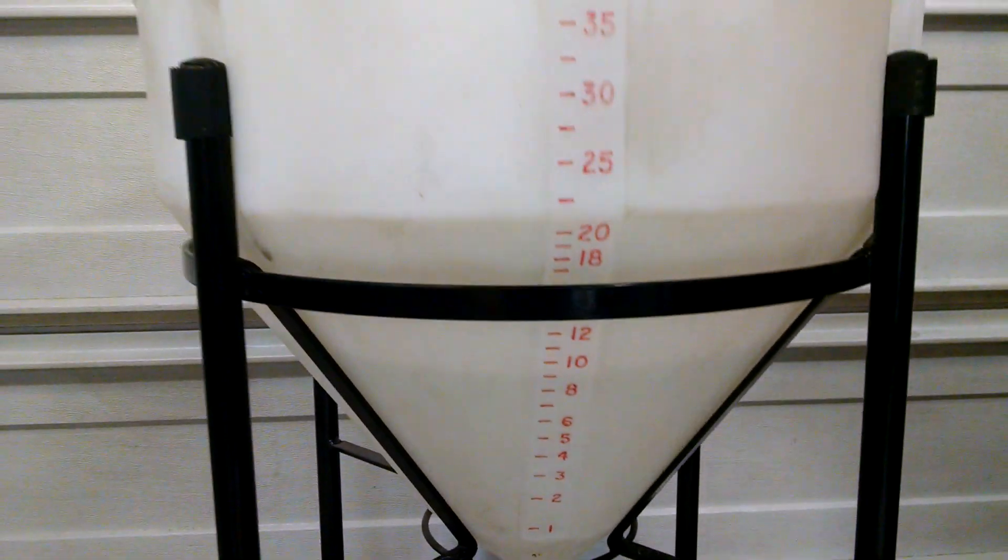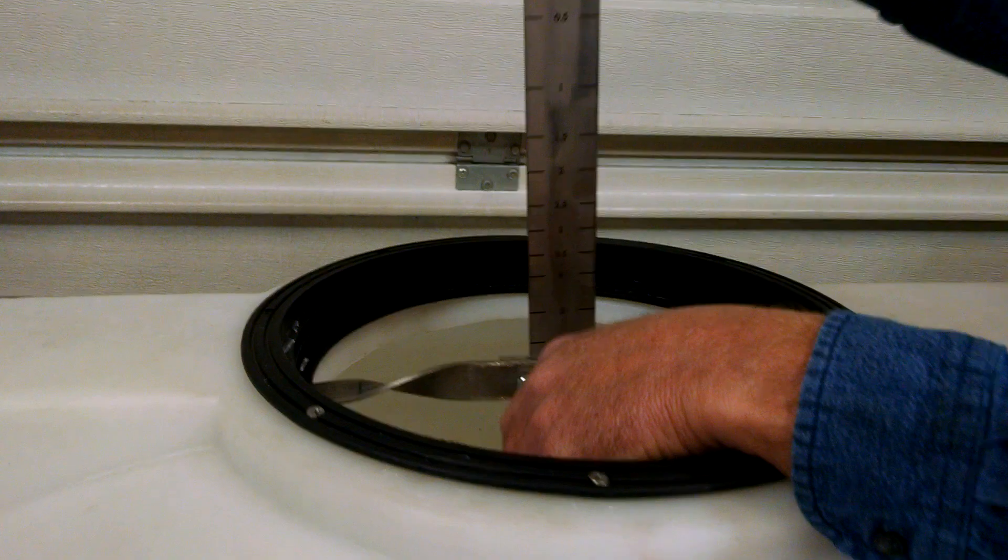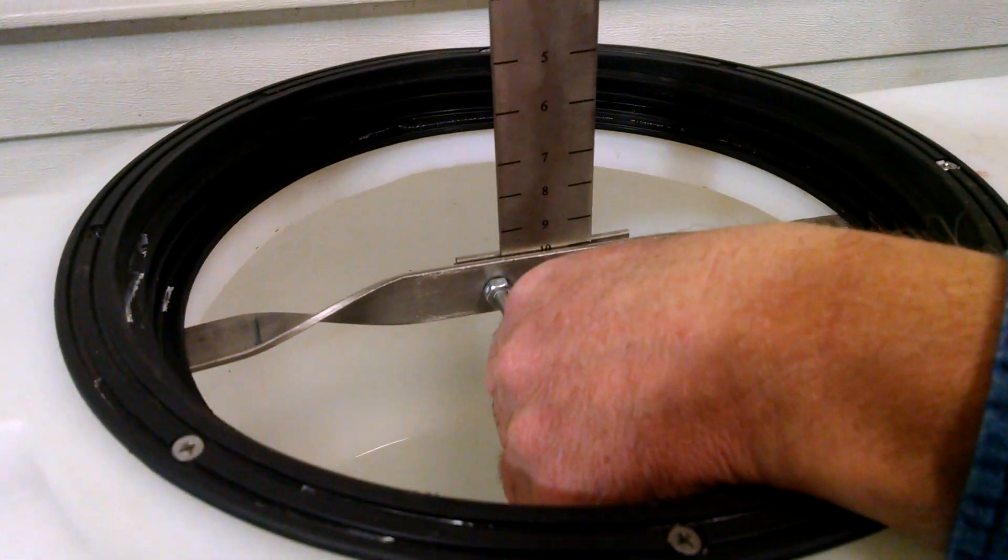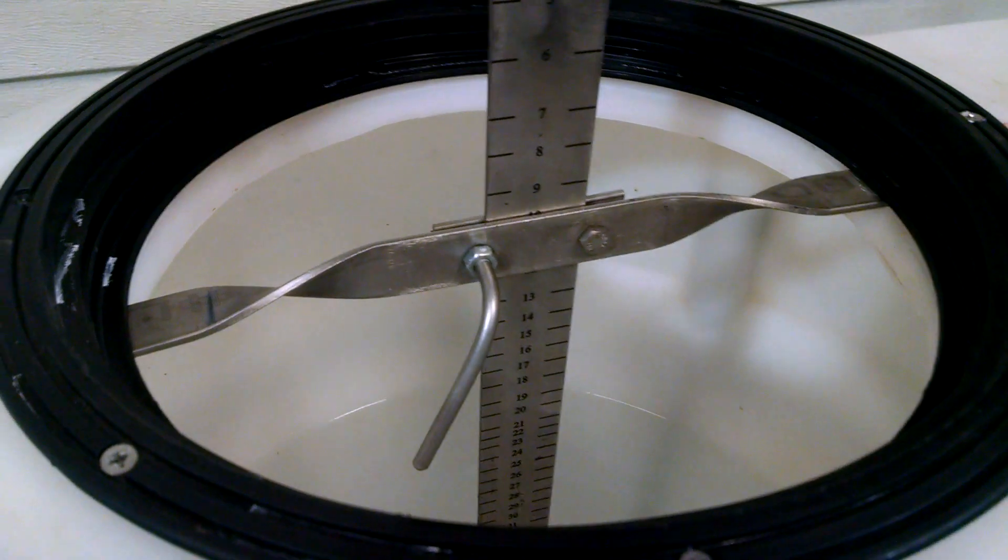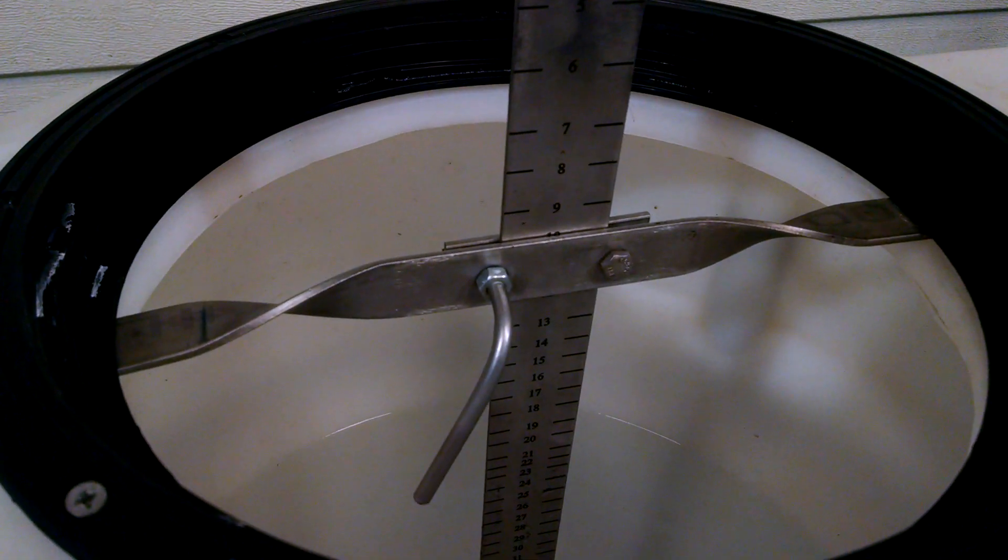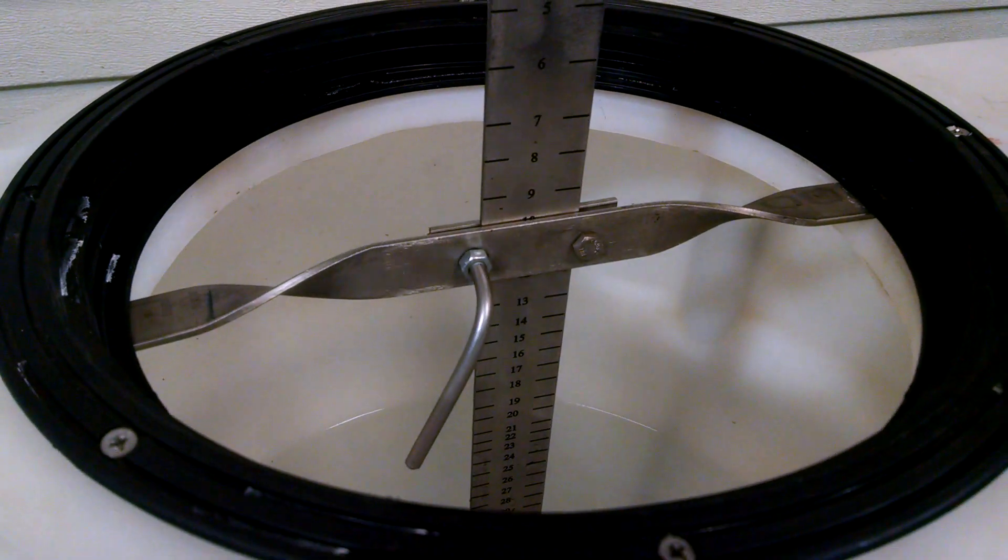What I have developed here is a measuring stick. You would find the amount of chemical you would want, in this example here, 10 gallons, and you're going to fill it up until the chemical touches the bottom of the stick.